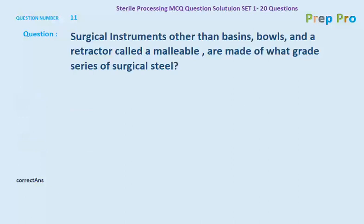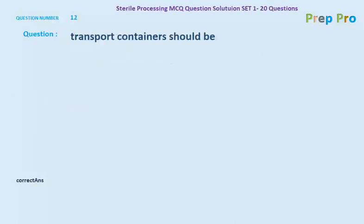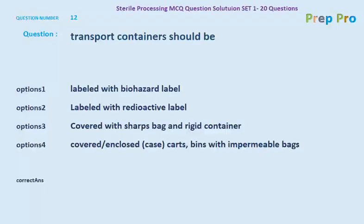Question number twelve: transport containers should be what? Options are: labeled with biohazard level, labeled with radioactive level, covered with sharps bags and rigid container, and covered in enclosed carts or bins with impermeable bags. The correct answer is covered in enclosed carts or bins with impermeable bags.